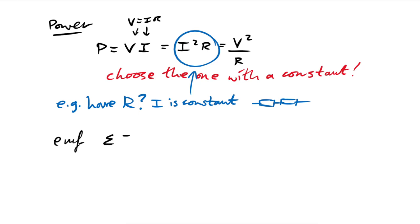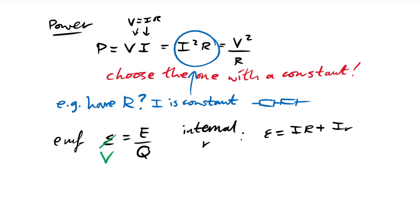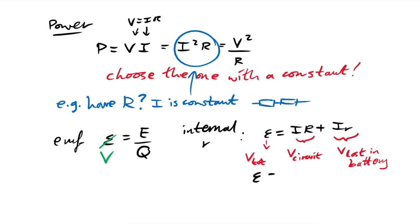EMF is energy gained per unit charge (joules per coulomb), the same as voltage but energy gained. The internal resistance equation is ε = I(R + r), which is just voltage = voltage + voltage: the total EMF equals the terminal PD plus the voltage lost across the internal resistance. Factorising shows it's simply V = IR applied to two resistors in series — the external resistance and the internal resistance.